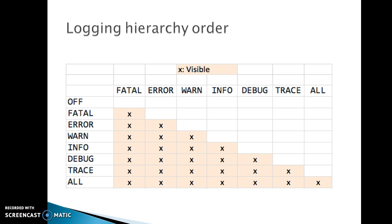ERROR is more restricted than WARN and is used to log errors and exceptions. You can also set up an alert on the ERROR level and alert the monitoring team to react. ERROR is serious and you should always log it. WARN is more restricted than INFO and is used to log warning messages like connection lost between client and server, database connection lost, or socket reaching its limit. These messages are important because they help your support team monitor the health of your Java application.